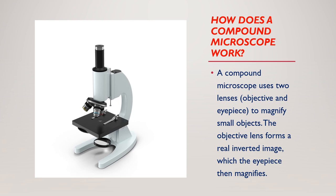How does a compound microscope work? A compound microscope uses two lenses — the objective and eyepiece — to magnify small objects. The objective lens forms a real, inverted image, which the eyepiece then magnifies.